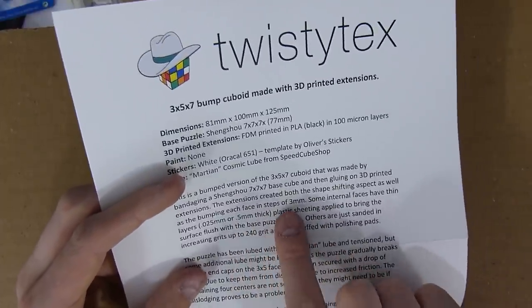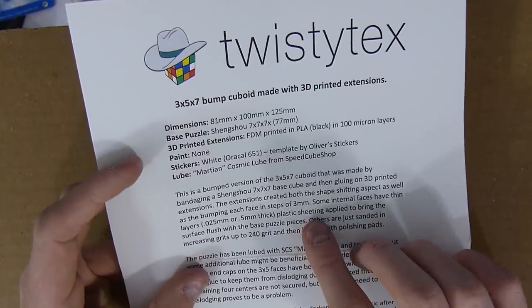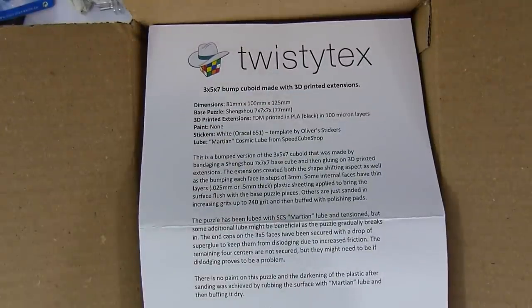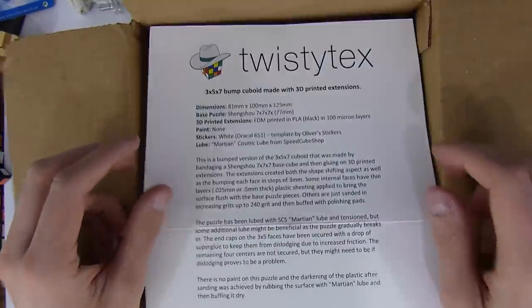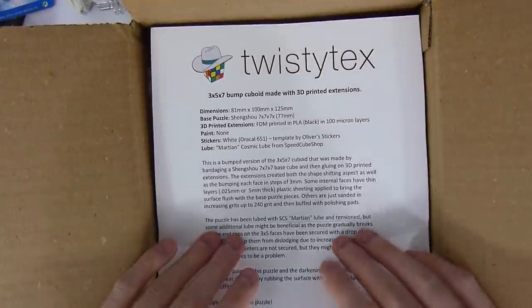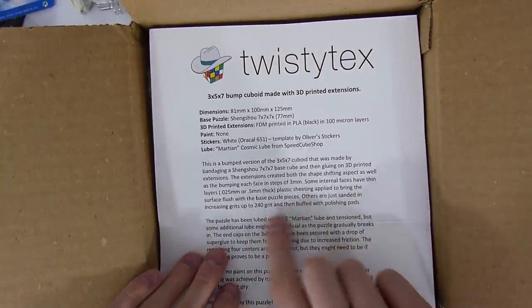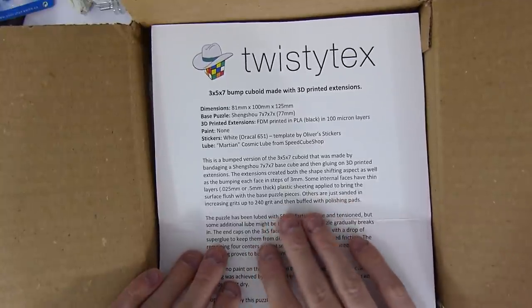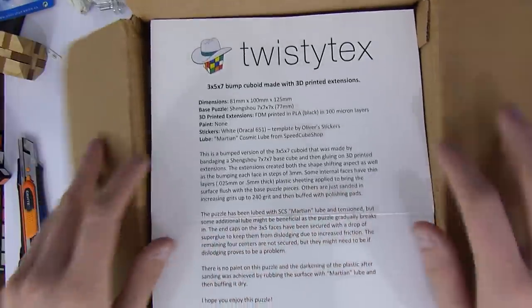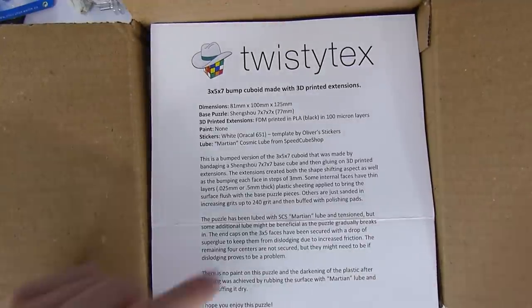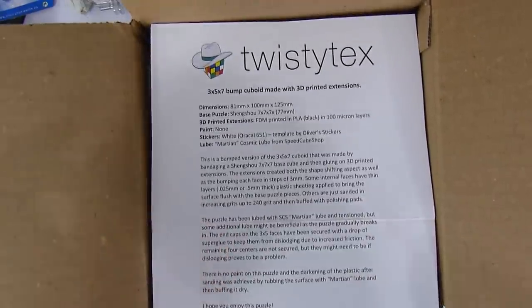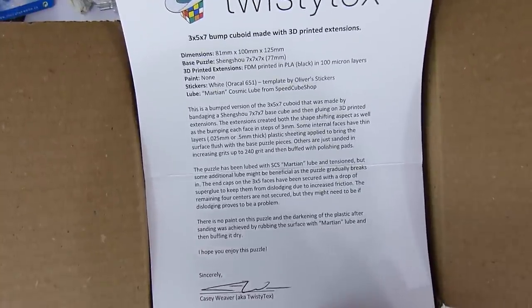The extension created both the shape-shifting aspect as well as the bumping each face in steps of 3mm. Now, Casey, I think that's insane because it's already called the ultimate shape-shifter and you just made it bumped. Some internal faces have thin layers, plastic sheeting applied to bring the surface flush with the base puzzle pieces. Others are just sanded and increasing grits up to 240 grit and then buffered with polishing bags. This puzzle has been lubed with Martian lube and tensioned, but some additional lube might be beneficial.